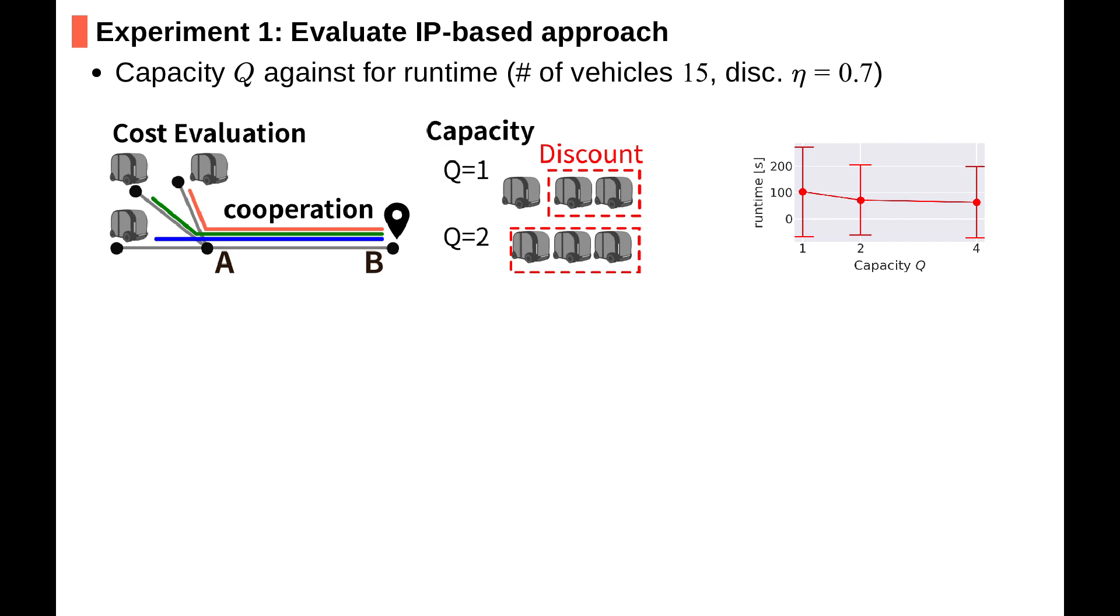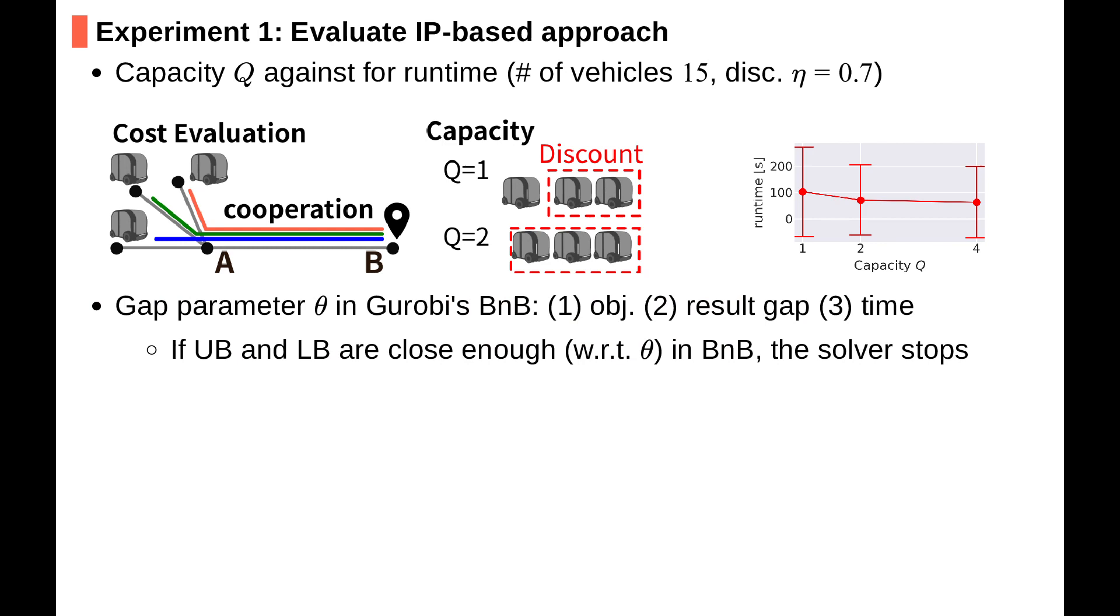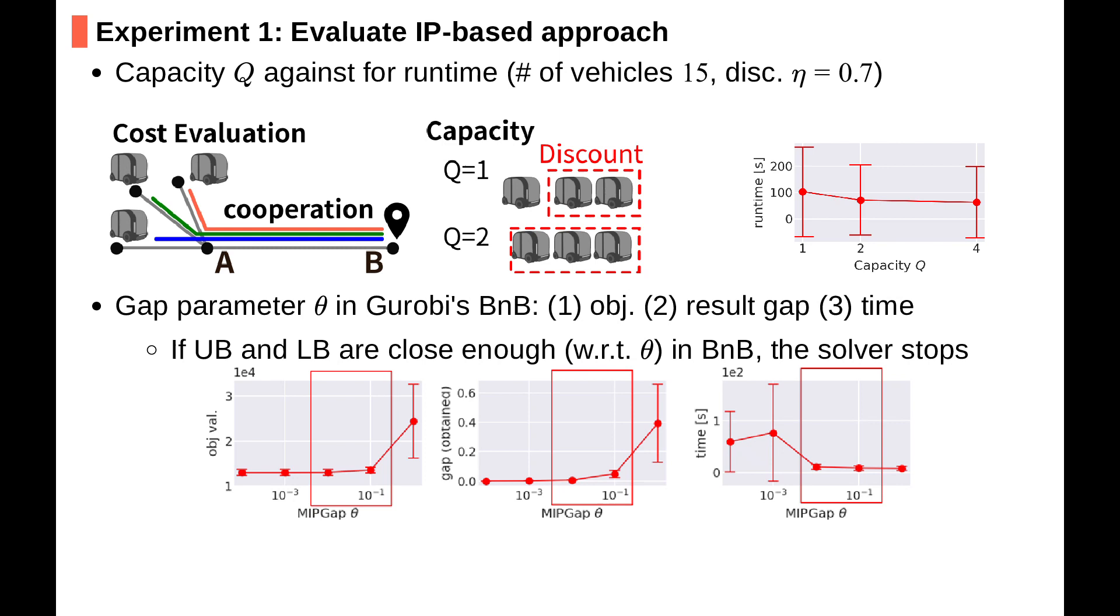Second, we observe the behavior of IP solvers with respect to the parameter theta used in the branching and bound procedure. In branch and bound, if both the upper bound and lower bound are close enough, the solver stops. Three figures show travel cost, resulted gaps by solvers, and runtimes. We can see that if we set theta to 0.01 or 0.1, the computed result seems to be almost optimal.